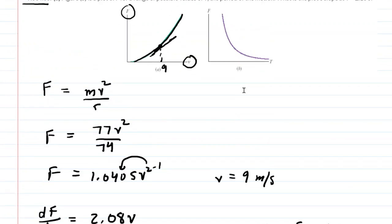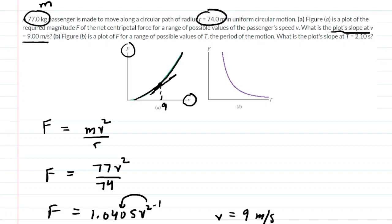We can go to part B now. In part B, we have a different type of plot. We have force once again, but this time it's plotted against the period of this object's motion. They ask again for slope. What is the plot's slope when the period is 2.10 seconds? So we need to come up with another equation involving force and period.